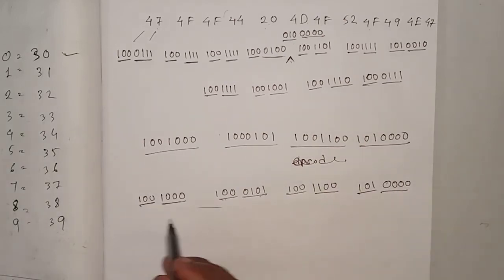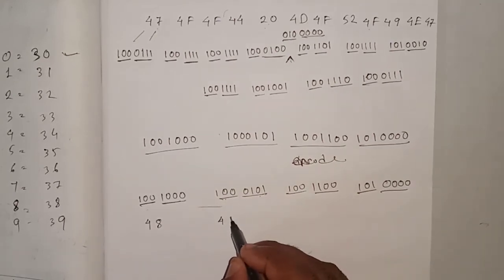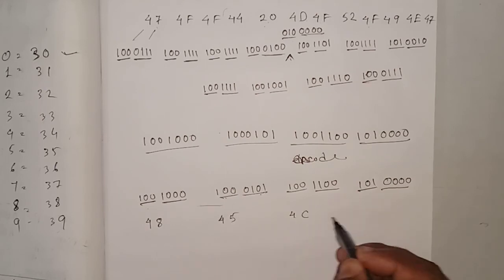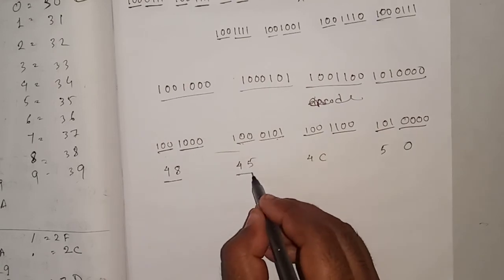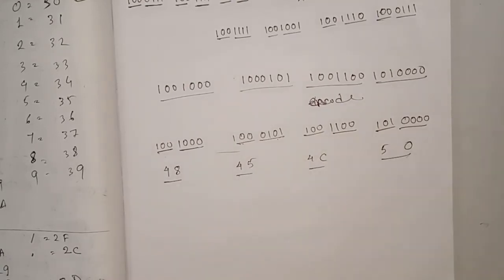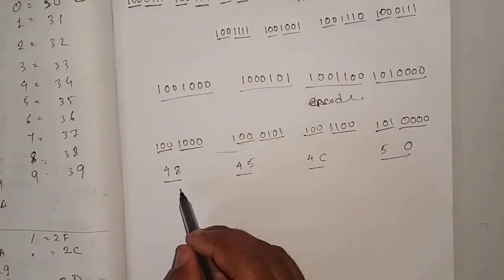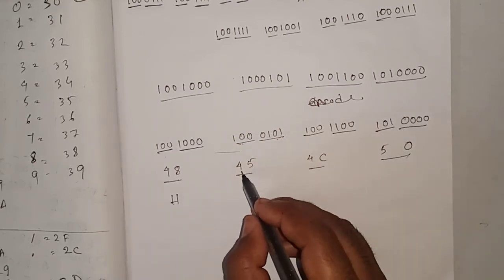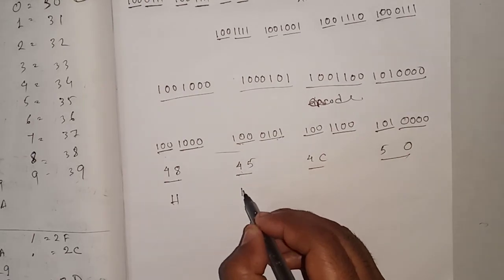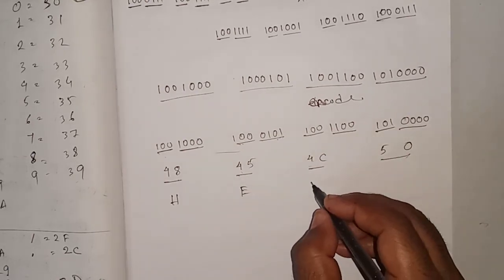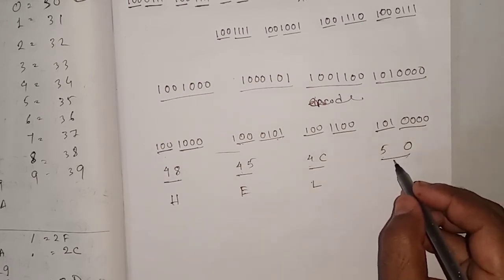Now write the hexadecimal value of each part. The first group: 100=4, 1000=8 → 48. Second group: 100=4, 0101=5 → 45. Third group: 100=4, 1100=C → 4C. Fourth group: 101=5, 0000=0 → 50. So we have hex values 48, 45, 4C, 50.